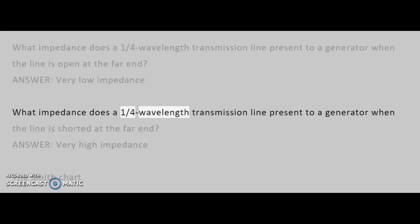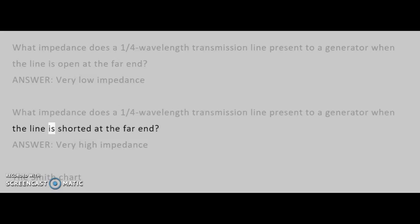What impedance does a one-quarter wavelength transmission line present to a generator when the line is shorted at the far end? Answer: Very high impedance.